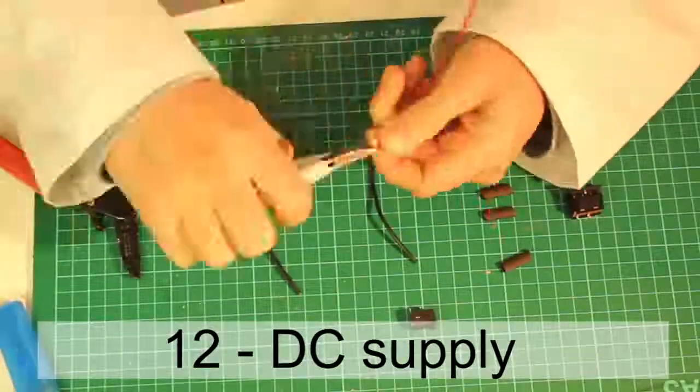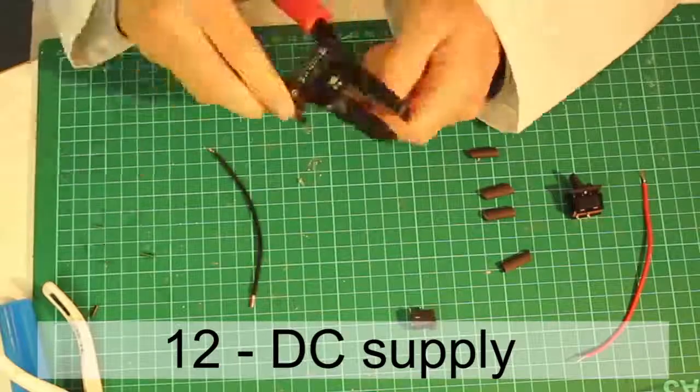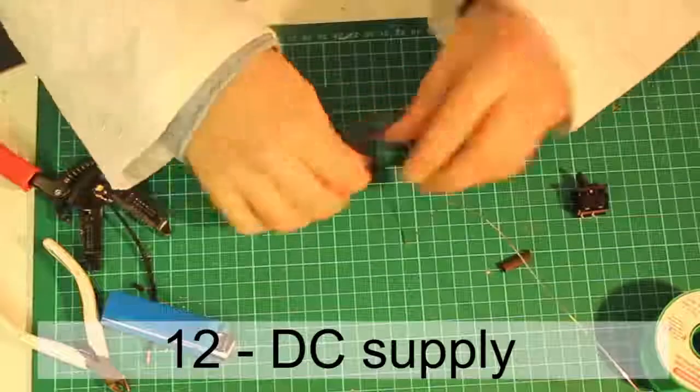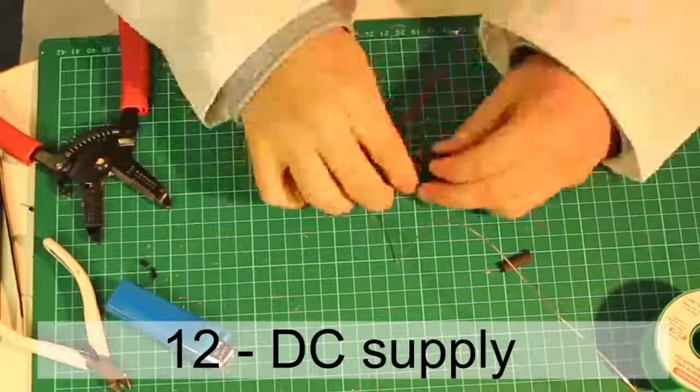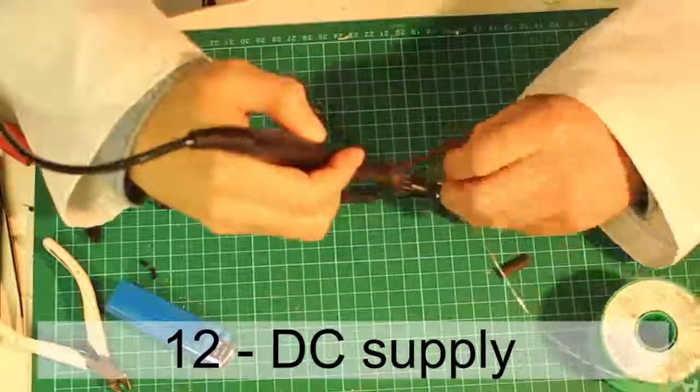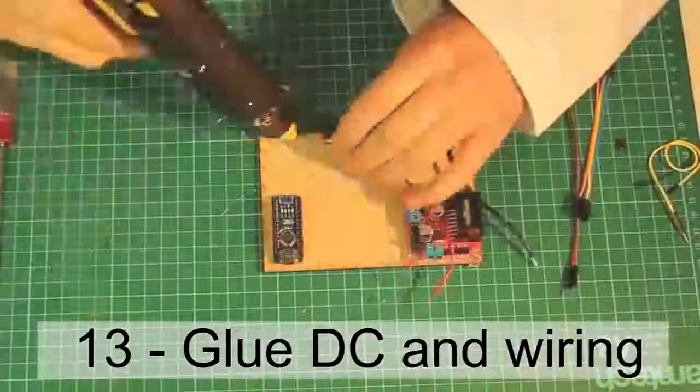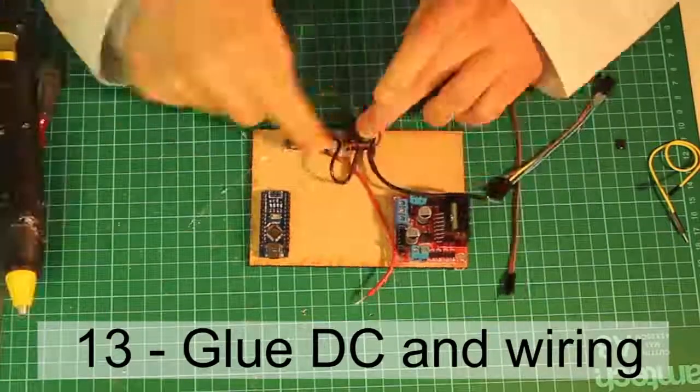For the power supply, get a positive wire and a negative wire and solder them to the DC barrel. You can apply shrink tubes to make it more secure. Solder the other end of the negative wire into the switch and another wire into the switch. Apply shrink tubes and tin the ends. Glue the DC barrel and the power switch.